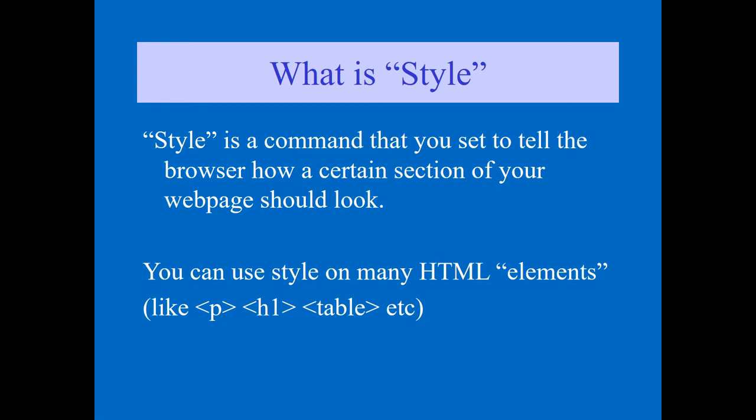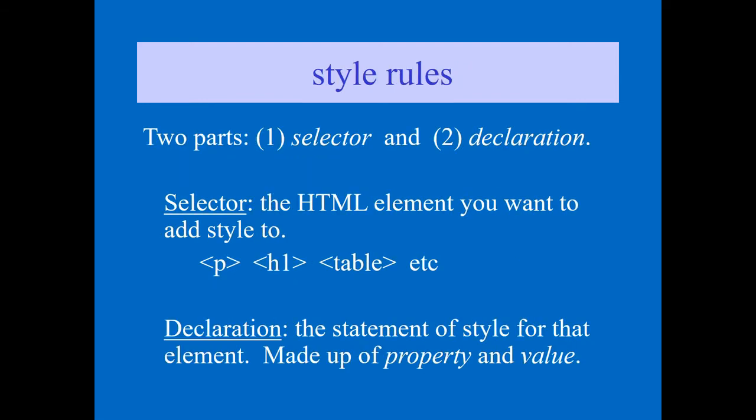In HTML you can apply style to any elements — p, h1, table, and many more. Whenever you write style rules, each rule has only two parts: one is called the selector, and the other is called the declaration. The selector is the HTML element where you want to add the style — paragraph, h1, table — any HTML element where you want to add the style.